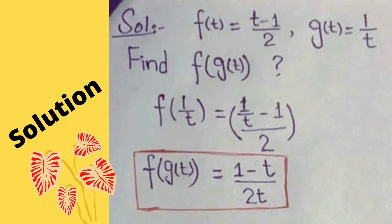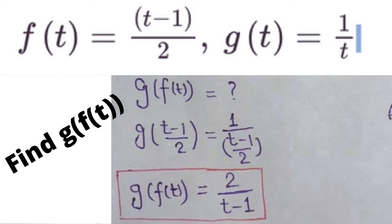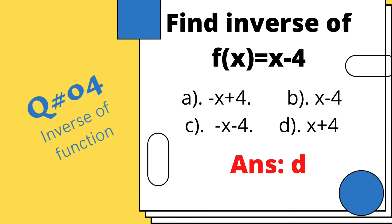...belong to the SAT subject test, and similar questions can be asked for g(f(t)). You can also check its solution. If they ask for the composition g(f(t)), you can follow the same pattern as previously. The answer is 2/(t-1). You can note these questions in your notebooks. Now we check the next question: Find the inverse of the given function.